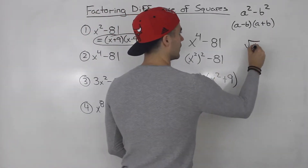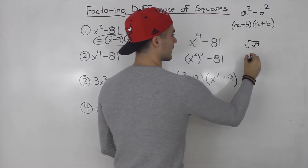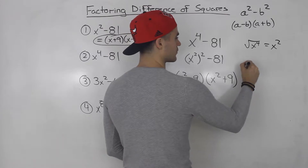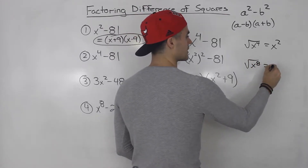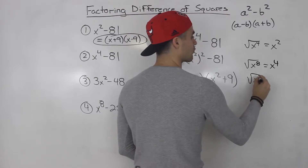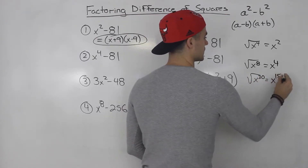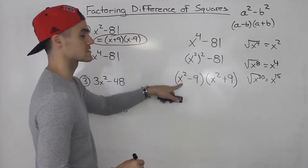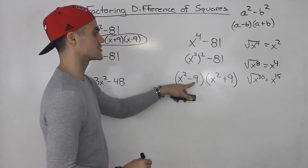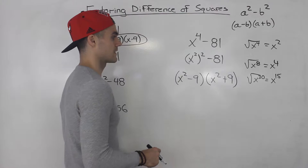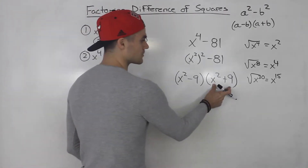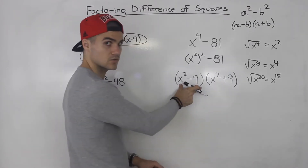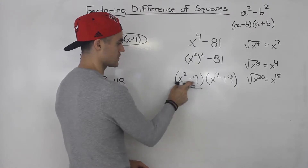The square root of x to the power of four is x squared — it's always just going to be half of that exponent. So the square root of x to the 8 is x to the 4, and the square root of x to the 30 is x to the 15. Now notice that x squared plus nine we can't factor — that's not a difference of squares because there's a plus sign. But x squared minus nine is a difference of squares, so we could factor that further.